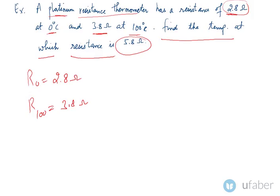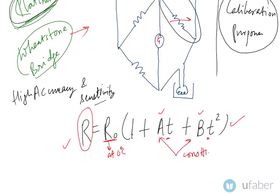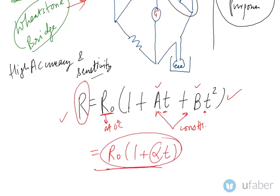Let us say that the relation between resistance at any temperature and temperature is R = R₀(1 + αT), where alpha is a constant. We have rearranged the aT and bT² terms to find alpha. Combining these two terms gives R₀(1 + αT), where we have to find the value of alpha.